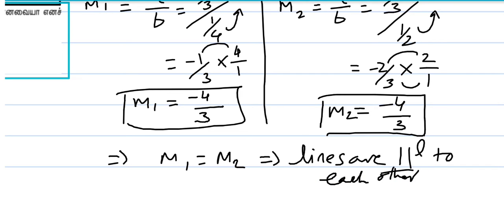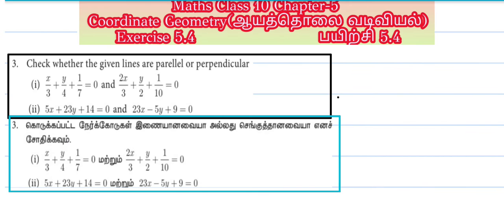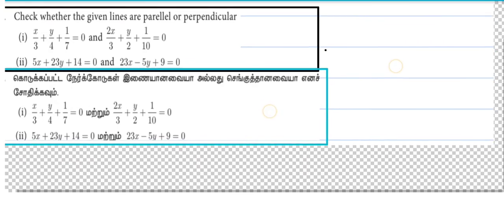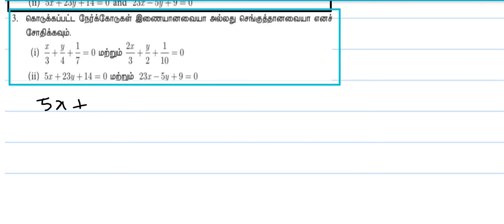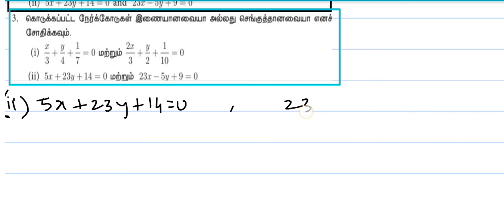Now, sub-question 2. Equation 1 is 5x plus 23y plus 14 equal to 0. Equation 2 is 23x minus 5y plus 9 equal to 0.